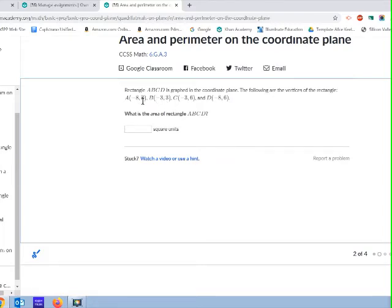They have the same y coordinate, 3. So that would mean that they are right and left of each other. One is at a position of negative 8 on the x axis. The other is at a position of negative 3. So I can tell just looking at the x coordinates that they are 5 apart. So side AB has to have a length of 5.